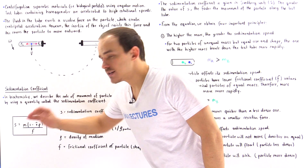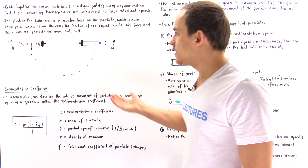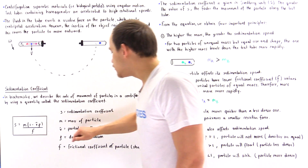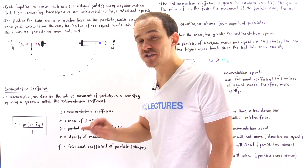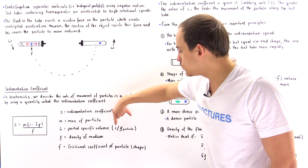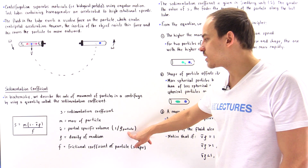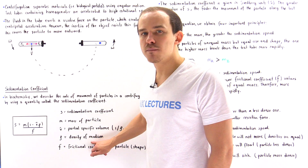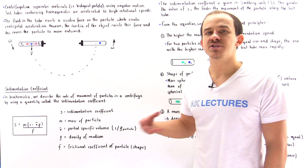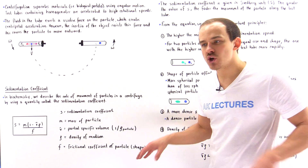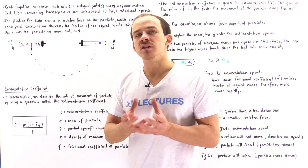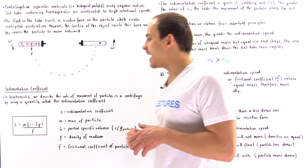m is the mass of the particular particle we are examining — in this case, the mass of the blue biological particle. v-bar is known as the partial specific volume, and more specifically, it is the reciprocal of the density of that particle, so v-bar equals 1 divided by the density of that particle. Rho is the density of our medium — the fluid. f is the frictional coefficient of that particle, and this has to do with the shape of the particle: the more spherical the particle, the lower the value of f; the less spherical, the higher the value of f.